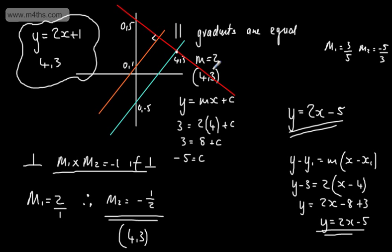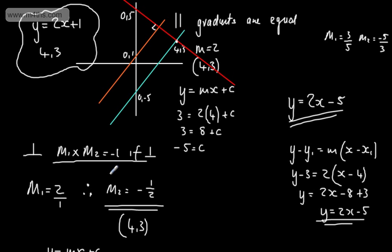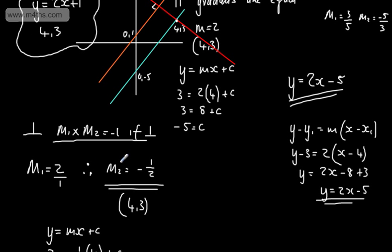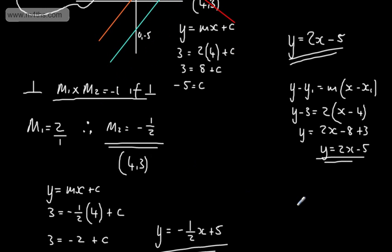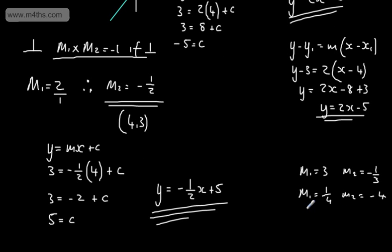The take-home points: if lines are parallel, their gradients are equal — sub the point into the straight line equation. If lines are perpendicular, the product of their gradients equals minus 1, so use the negative reciprocal. For example, if m1 equals 3, then m2 equals minus 1 third; if m1 equals 1 quarter, then m2 equals minus 4; if m1 equals 7 over 8, then m2 equals minus 8 over 7.